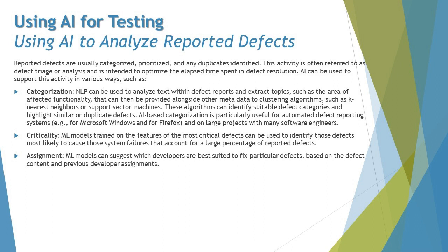Number one is categorization — classifying a defect into the right and appropriate category. NLP can be used to analyze text within defect reports and extract topics such as areas of affected functionality. That information can then be provided alongside other metadata to clustering algorithms such as k-nearest neighbors or support vector machines. These algorithms can identify suitable defect categories and highlight similar or duplicate defects. AI-based categorization is particularly useful for automated defect reporting systems, for example Microsoft Windows and Firefox.